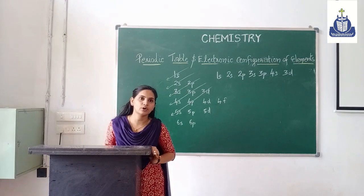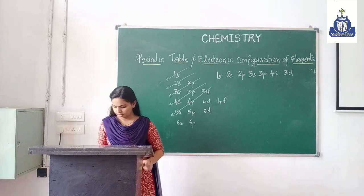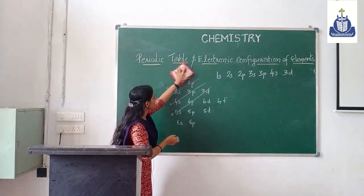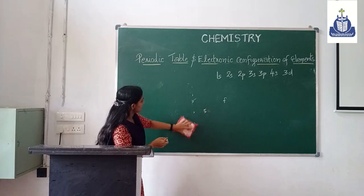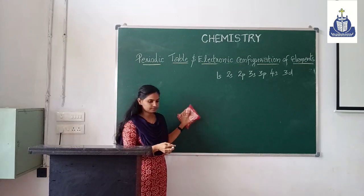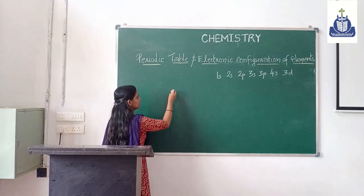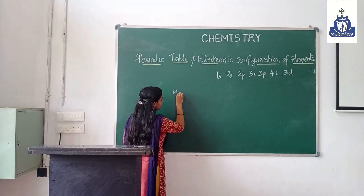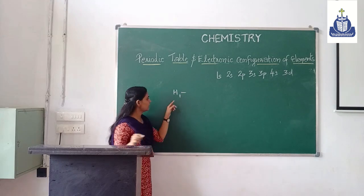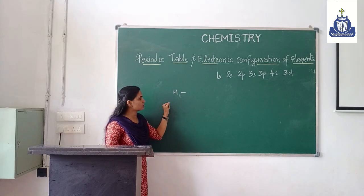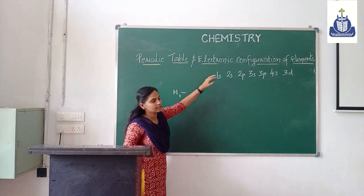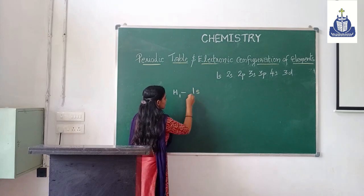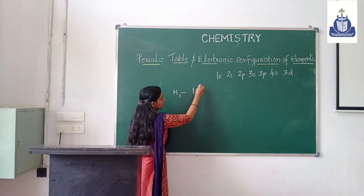Now, what will be the sub-shell electronic configuration of hydrogen? Hydrogen's symbol is H, and its atomic number is 1, so it has only one electron. This one electron goes into the first subshell, 1s. So the electronic configuration of hydrogen is 1s¹. Here, '1' indicates the shell number and the superscript indicates the number of electrons.